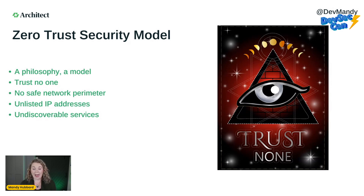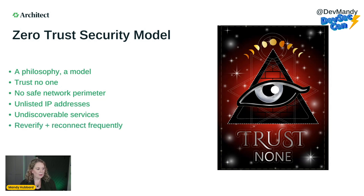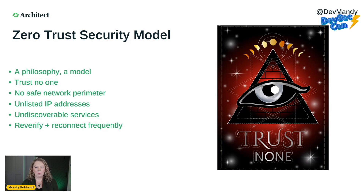You don't want to advertise the resources that hold your private data. If an attacker doesn't know it exists, they can't go after it. So we lock things down and only services that need to know about other services have that information — it's not publicly available. Another important concept is that resources that need to communicate will need to reconnect and re-verify frequently. It's not enough to create an initial connection and then run indefinitely.